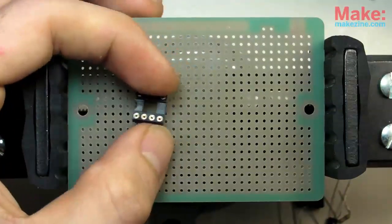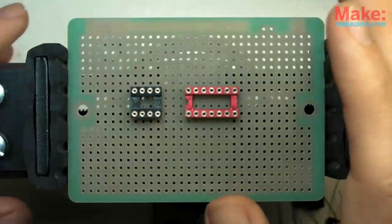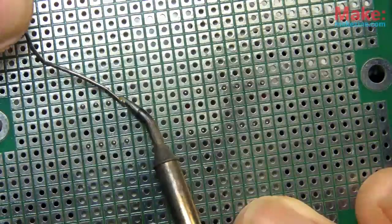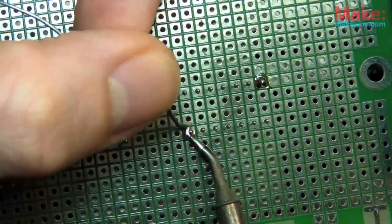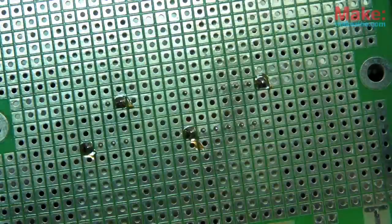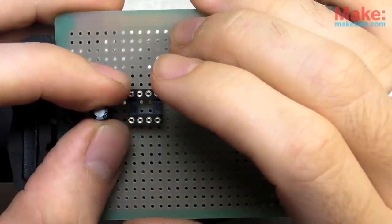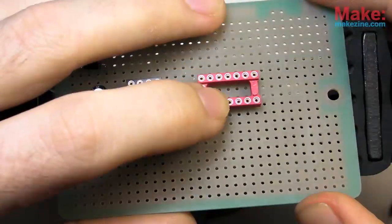First off, I'll stake out some prime real estate for my chips and solder in their sockets. Just a couple of pins at first, I'll solder the rest once I'm totally sure that's where I want them. While following along with the schematic, I'll arrange each part so that they can easily be connected to one another.